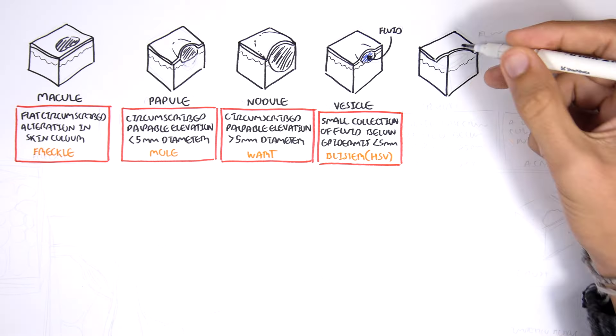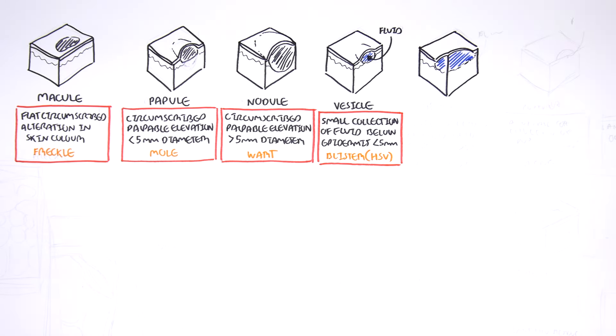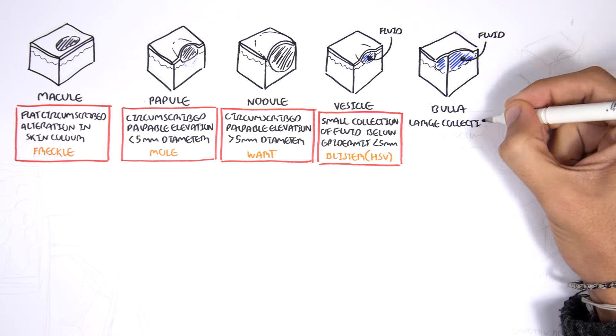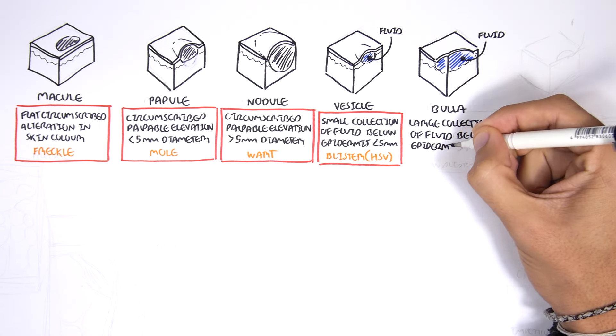Let's begin with a macule. A macule is described as a flat, circumscribed alteration in skin color. An example of a macule is a freckle.